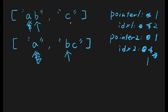Now we've reached the end of the first word in the first input array, so we update pointer one to the next index and reset index one to zero. Now we're pointing at 'c'. In the second array, pointer is one and index two is one, so we're pointing at 'c' as well. We check both characters — they are the same — so we update index one to one, making it two.